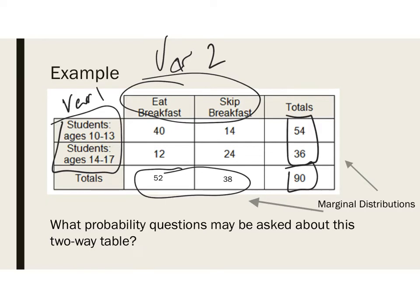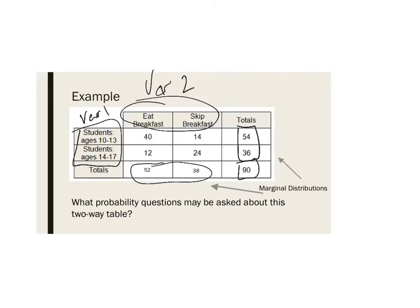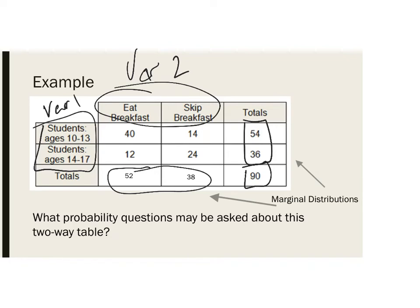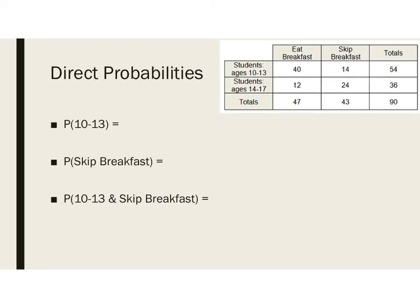When we look at what probability questions might be asked, it could be as simple as: what's the fraction of 10-to-13-year-olds out of the total group, which would just be 54 out of 90. It could be the fraction who skip breakfast — 38 out of 90 — or an 'and' question: 10-to-13 AND eats breakfast, which is 40 out of 90. Or it could be a conditional question, where out of the 54 ten-to-13-year-olds, 40 eat breakfast.